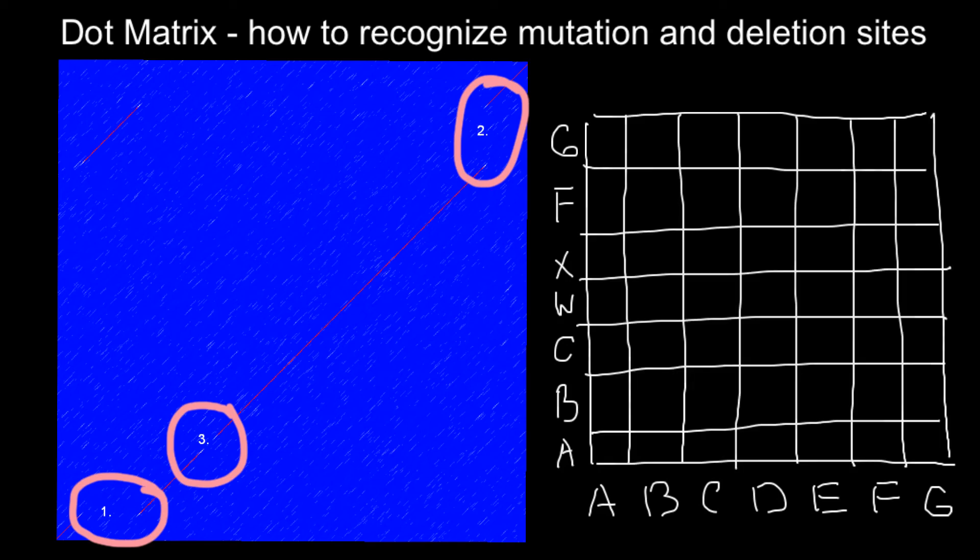As you probably noticed, we have a match of all letters except X and W on this strand and D and E on this strand. Let's see what we get if we build a dot matrix. Perfect match here, here, and in this cell. The next two cells we don't have a match, and we have match F and G.